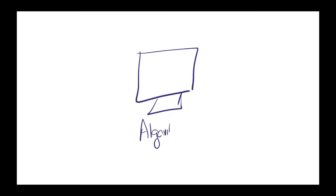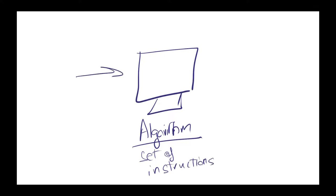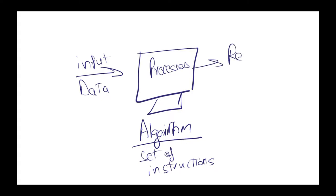Before we start with Teachable Machine, let's understand conceptually what artificial intelligence is. In traditional computing, you have a computer and you give it a set of instructions — a computer program, which is also called an algorithm. The algorithm tells the computer what to do with the data input, and the computer processes the data based on those instructions and produces the desired result.